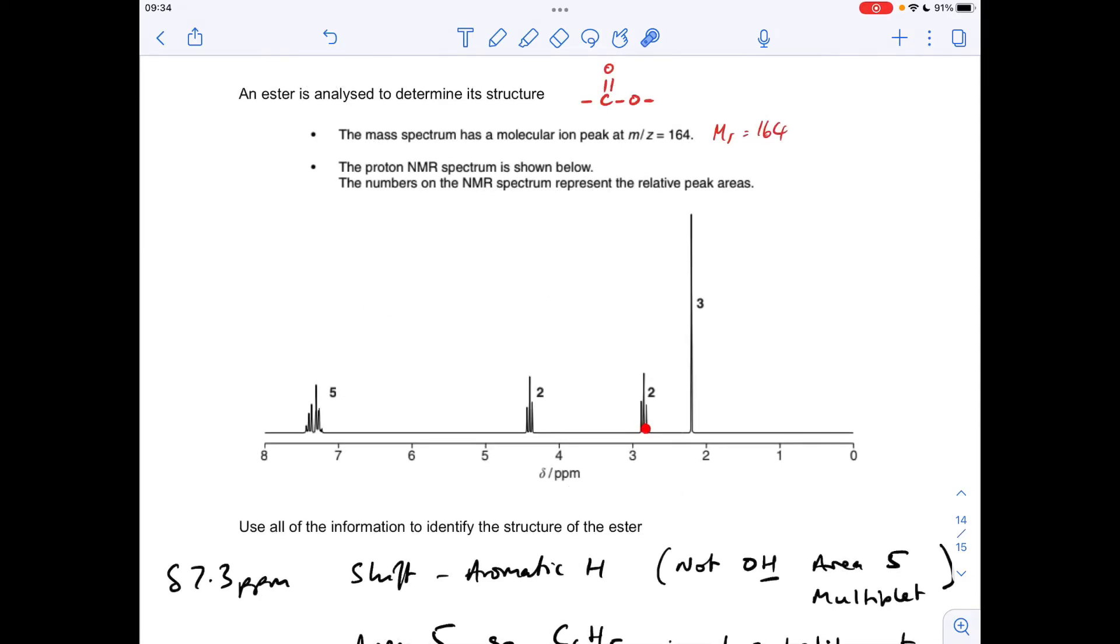So if we move on to this signal now, I'm saying this is around about delta 2.9 ppm, so again we've got another triplet, so there's an adjacent CH2 to the protons causing this signal. We've got an area of 2, so there's two protons causing the signal. And in terms of the shift value, well we've got two sort of environments at play at the moment. We've got the hydrogen bonded to a carbon bonded to a benzene ring, or we've got a hydrogen bonded to a carbon bonded to a C double bond O.